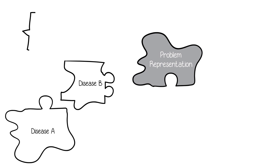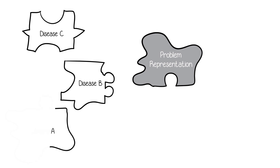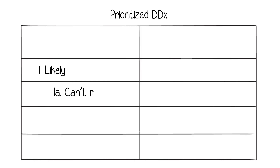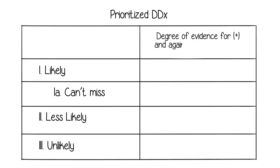Clinicians compare and contrast potential diseases described as illness scripts in alignment with the problem representation. The closer the match between the problem representation and the illness script, the more likely it is that the selected disease is the explanation for the patient's presentation.